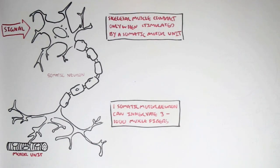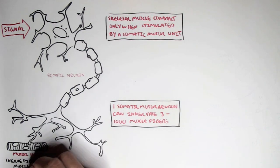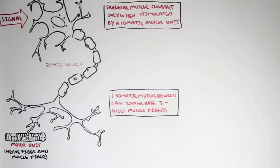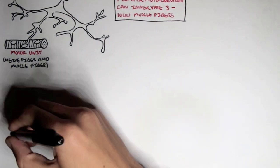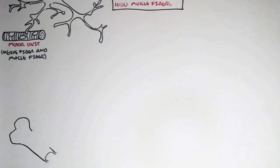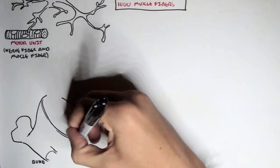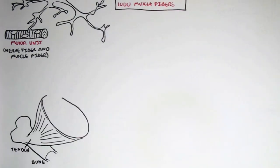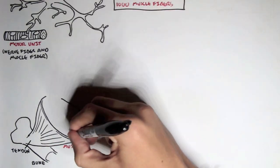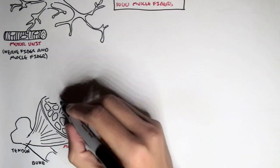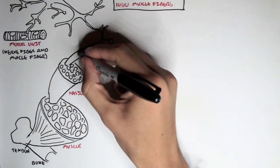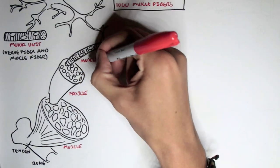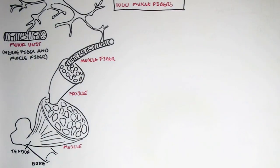When a neuron's nerve fibers connect to a muscle fiber, this complex is what we call a motor unit — where we have a nerve fiber and a muscle fiber. If we have a bone here with a muscle attaching on it, we have the tendon which attaches to the bone, and here we have the actual muscle. The muscle contains many structures within it — portions known as fascicles — and these fascicles then contain many muscle fibers.